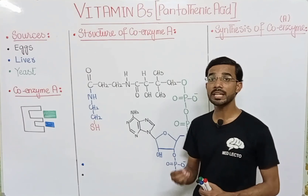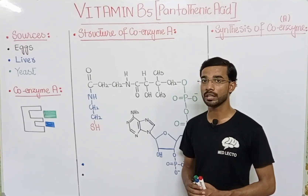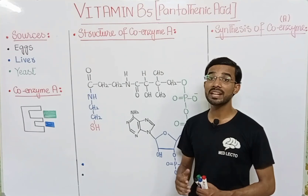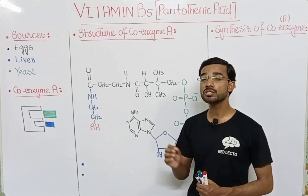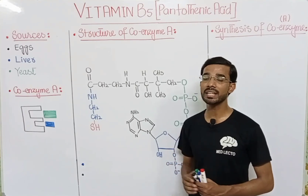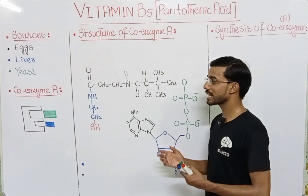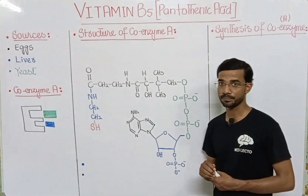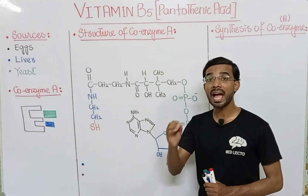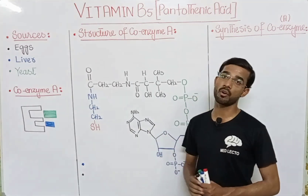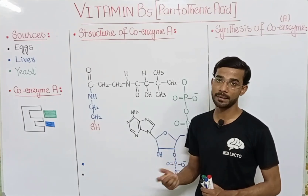So what is the important role of vitamin B5 in our body? It will act as a coenzyme. Water-soluble vitamins in the majority of cases act as coenzymes. More specifically, vitamin B5 is actually a component of Coenzyme A.